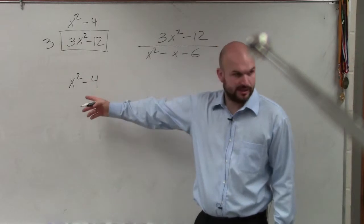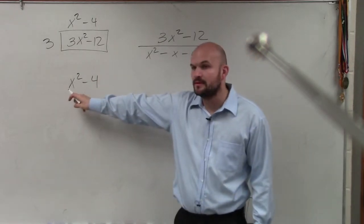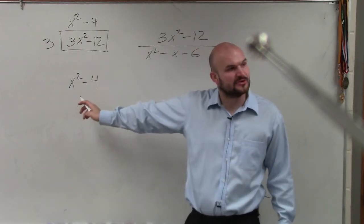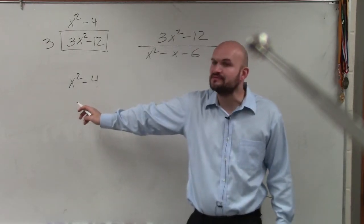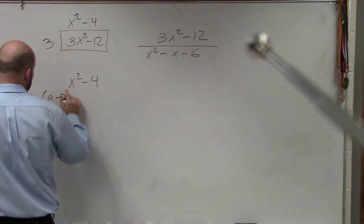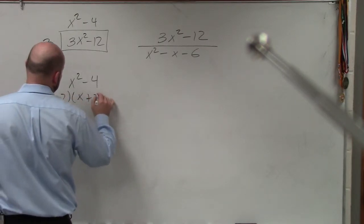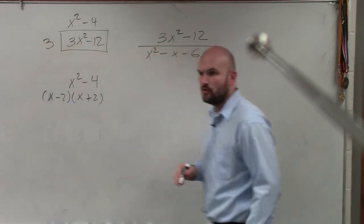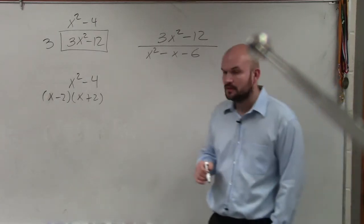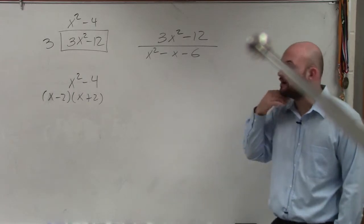I can't pull out a GCF — we already did that. But I look at x² minus 4. Is this a squared term? Yes. And it's the difference of two squared terms, which we call the difference of two squares — which I had a whole homework assignment on. So therefore, the answer for this is (x - 2)(x + 2). That is the factored form of your numerator — that's the difference of two squares. We've got to make sure we remember our factoring techniques.